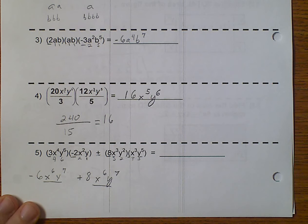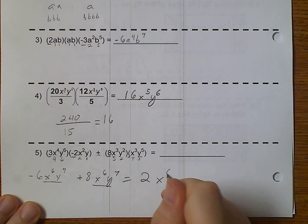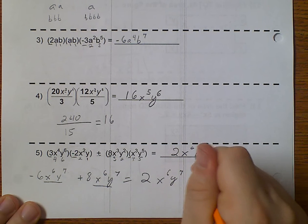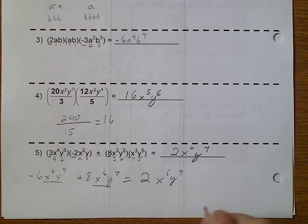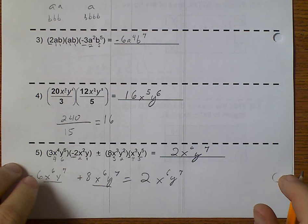And, negative 6 plus 8 equals 2. x to the 6th, y to the 7th. Let's go ahead and move on.